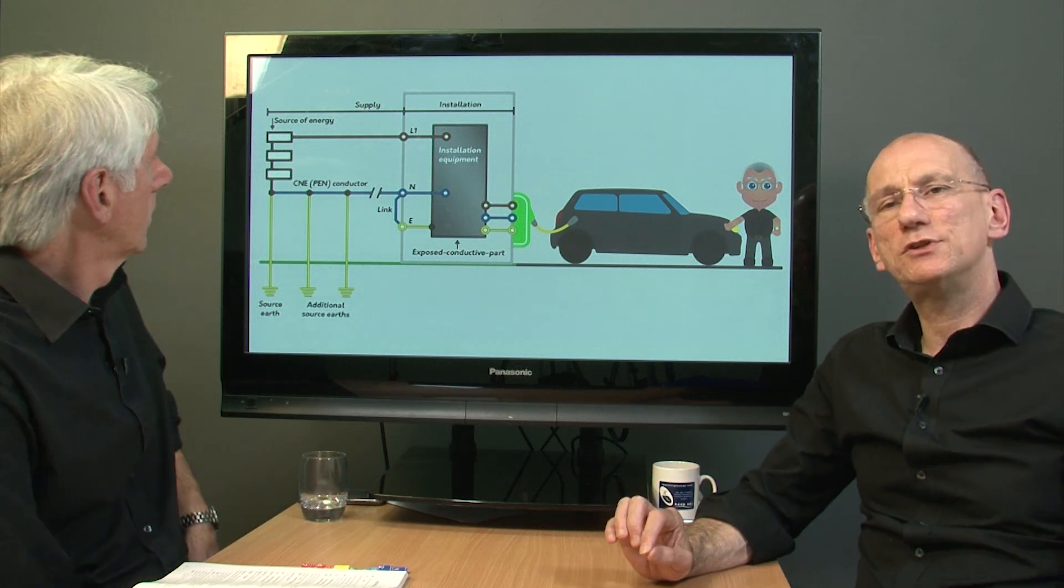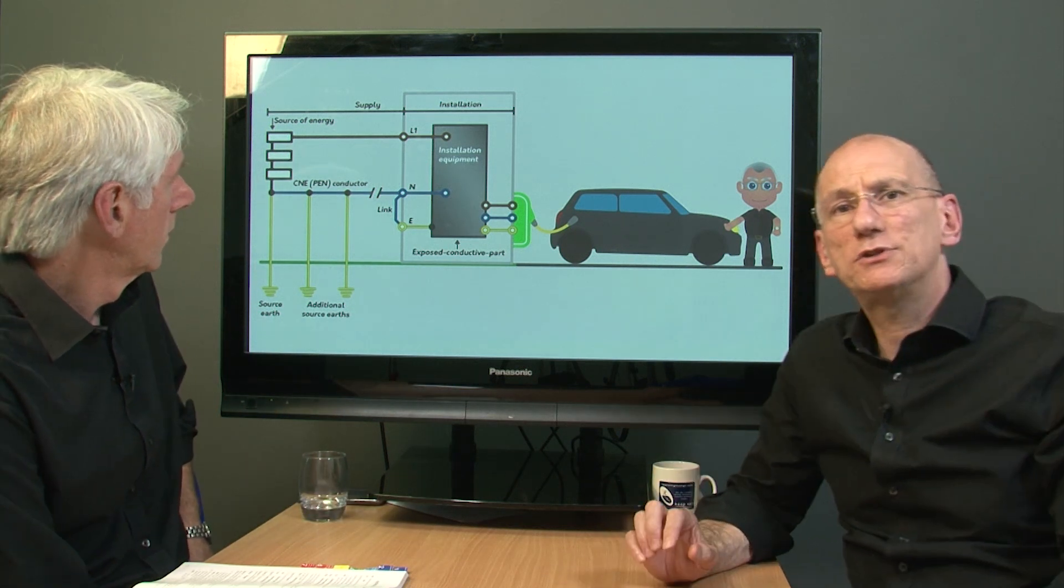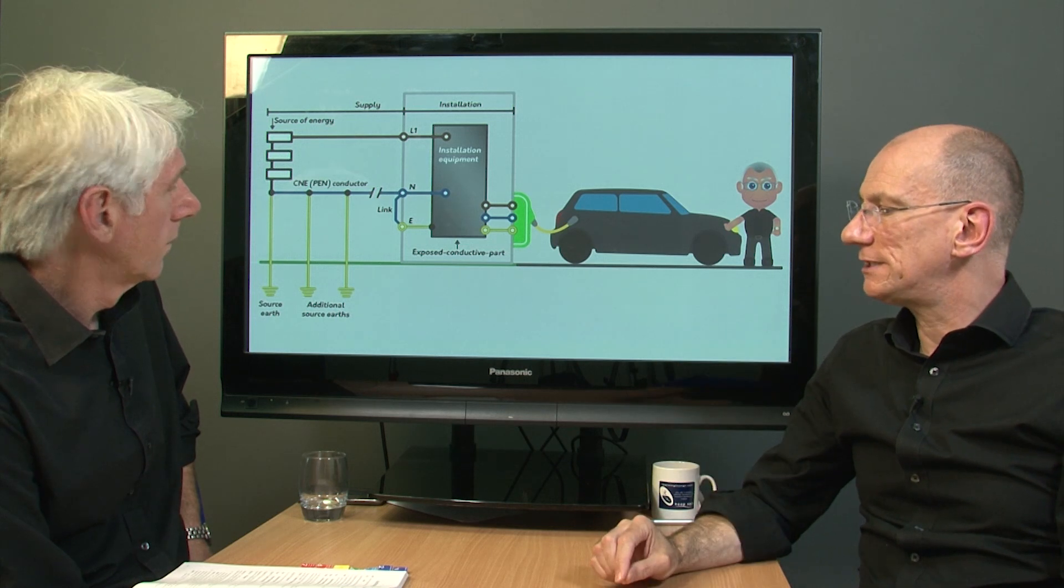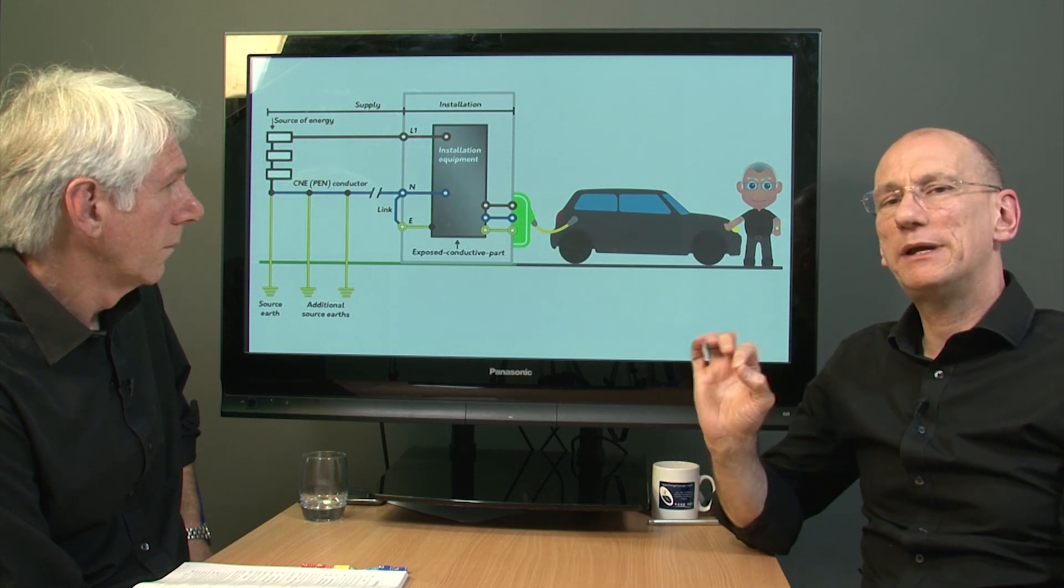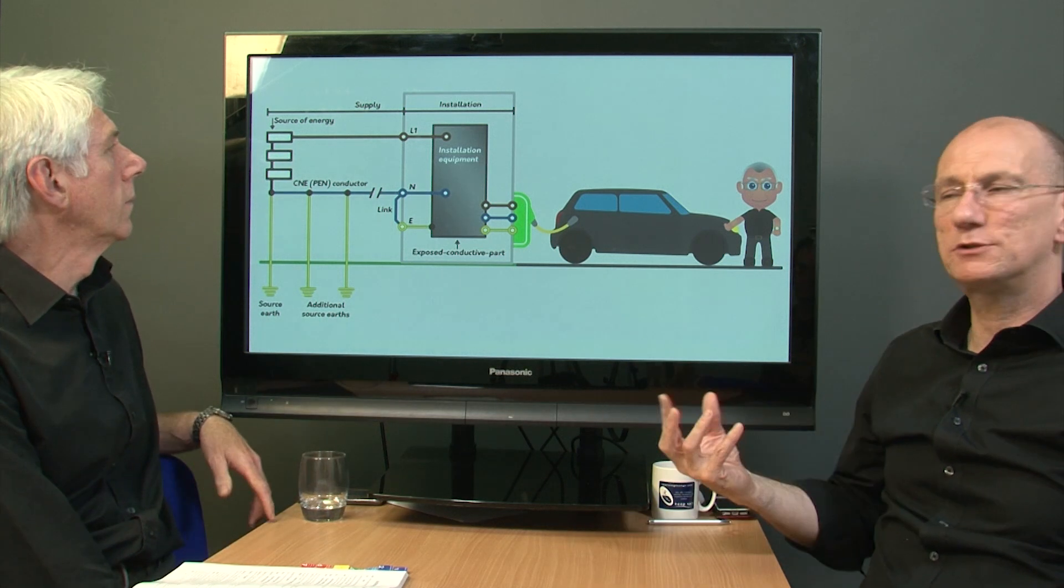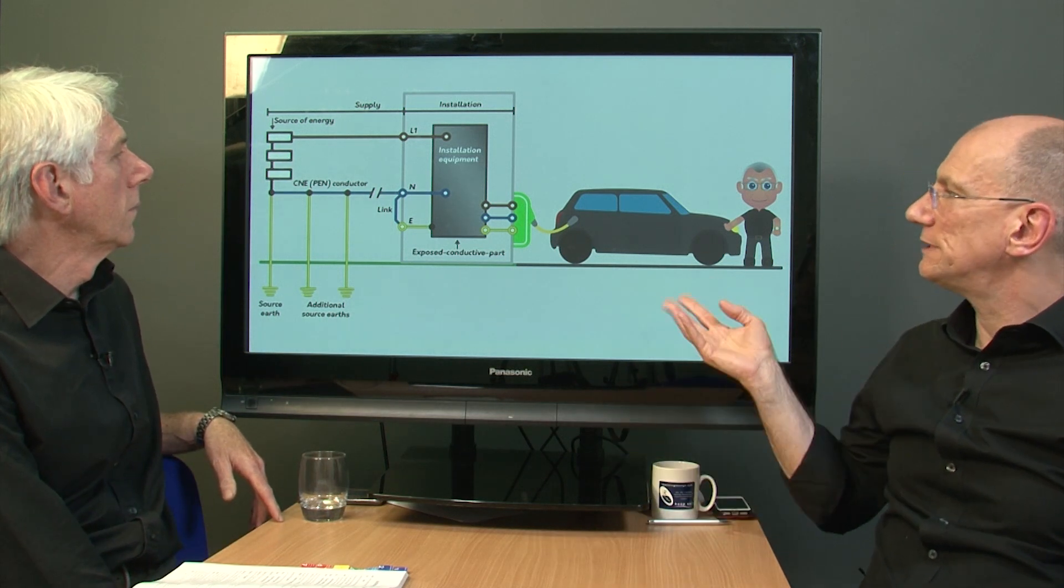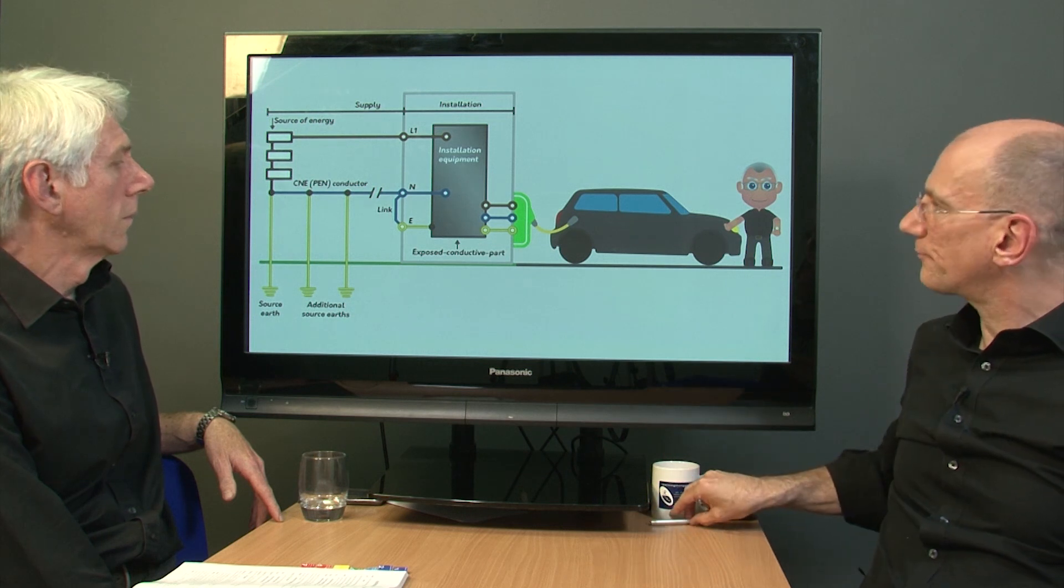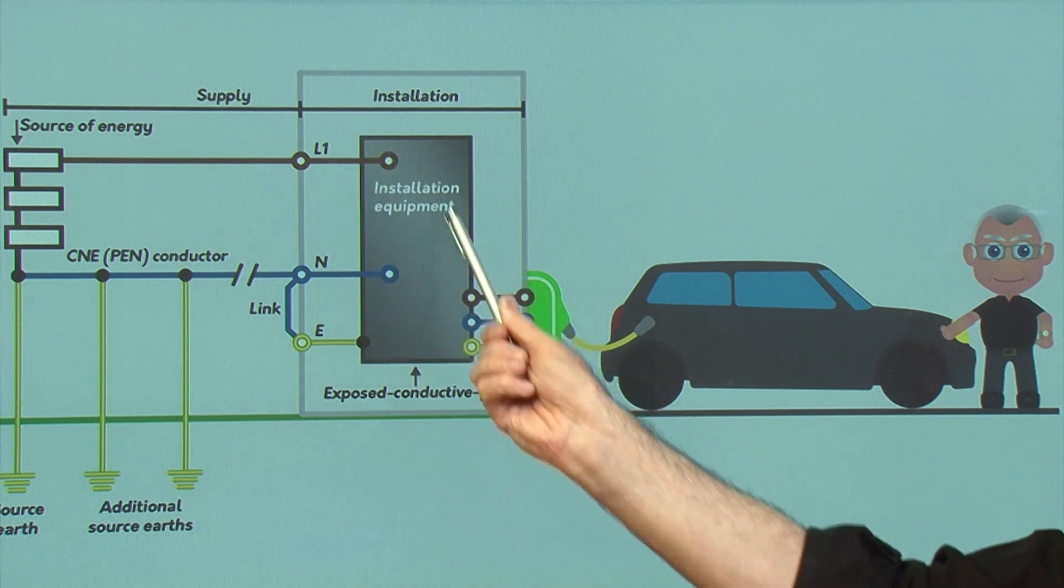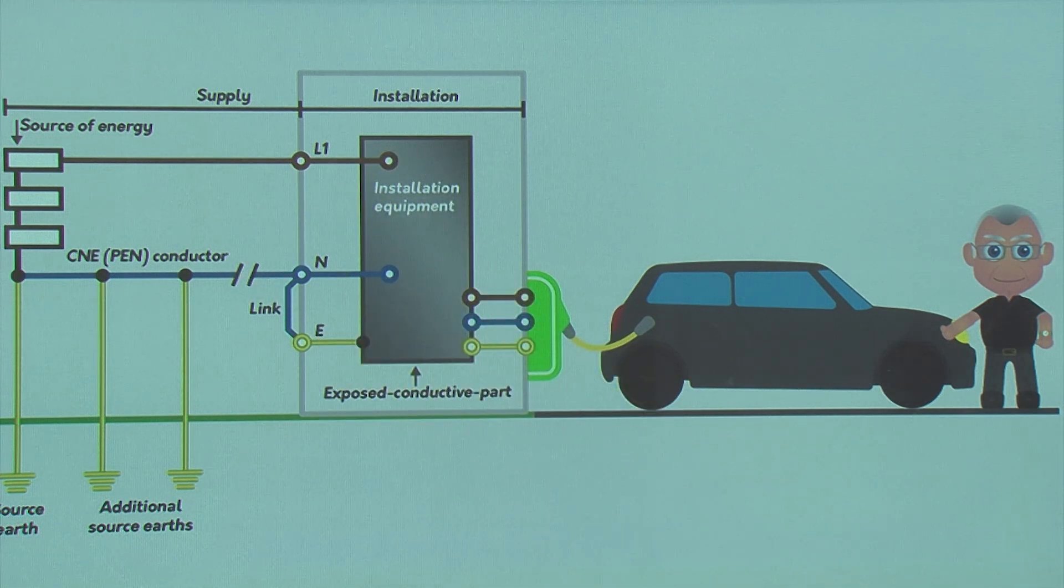In section 722, which covers electrical vehicle charging points, there's a particular point made about TN systems, and in particular a PME scenario, and why there is a risk. Now this isn't spelt out in the requirements, but this is a nice little picture to explain it. So, basically, we have our supply coming into the installation, and obviously a return path there via the neutral, via the pen conductor. Now that pen conductor is an earth and a neutral, so it's combined.